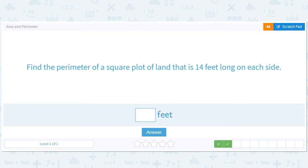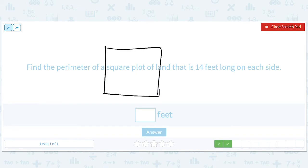Find the perimeter of a square plot of land that is 14 feet long on each side. So here it is. 14 times 4 is 56.